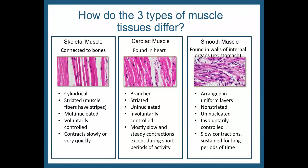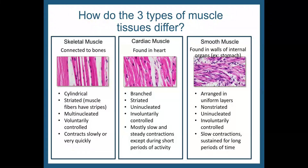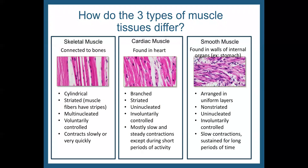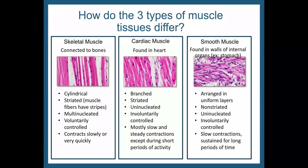The third type is smooth muscle tissue, and this is found in walls of internal organs — for example, your stomach. It's arranged in uniform layers. It is non-striated, so it doesn't look like it has stripes. It is uninucleated, so there's only one nucleus within this tissue. It's involuntarily controlled, meaning you don't have direct control over these tissues. These also have slow contractions that are sustained for long periods of time. This chart lays out some of the similarities and differences between each type.